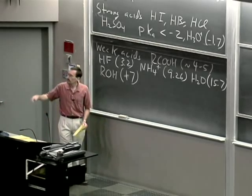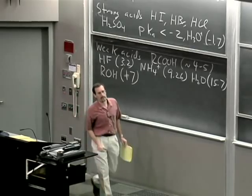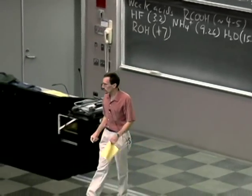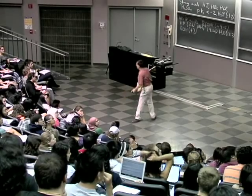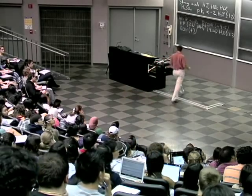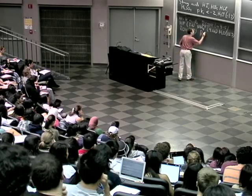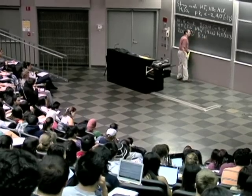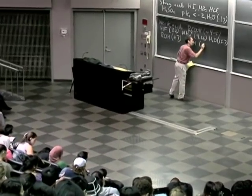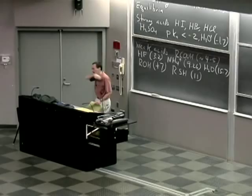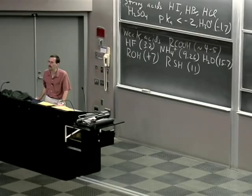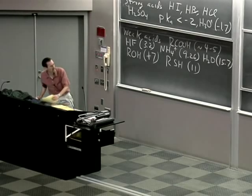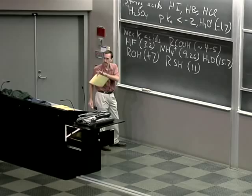Moving along — thiols are pretty important in various organic reactions. Remember, sulfur is right under oxygen in the periodic table. Thiols are a little bit more acidic than alcohols by about 6 pKa units. Thiols have a pKa of about 11, and that means if you dissolve a thiol in a solution of sodium hydroxide, you'll pull off the proton. We're going to come back to these equilibria in a moment.